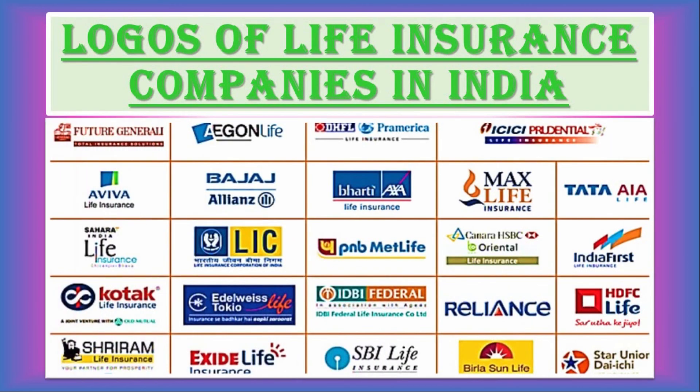These are the logos of some popular life insurance companies: Aviva Life Insurance, Sahara India Life Insurance, Kotak Life Insurance, Bajaj Allianz, Bharati Life Insurance, Max Life Insurance, Tata AIA, ICICI Prudential, and the famous LIC — Life Insurance Corporation of India — which is the only government life insurance company. Also: Edelweiss Life, Exide Life Insurance, IDBI Federal Life Insurance Company, SBI Life Insurance, and others.